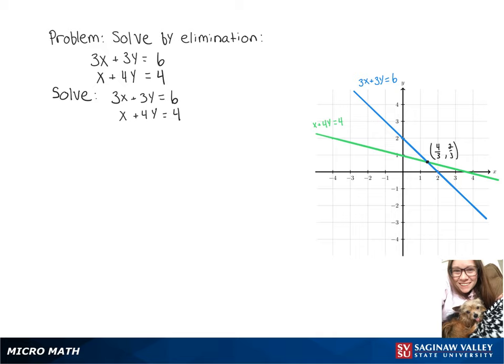To solve by elimination, let's start by multiplying both sides of our second equation by 3.